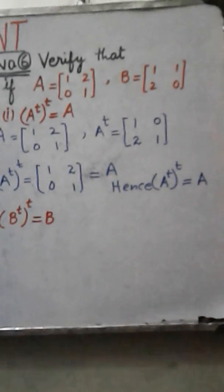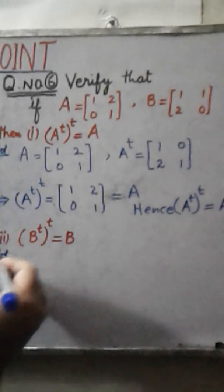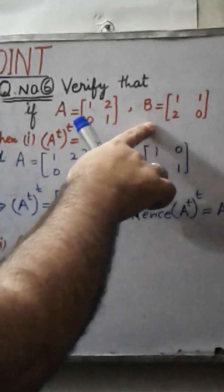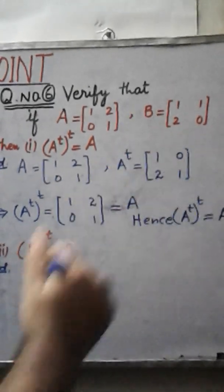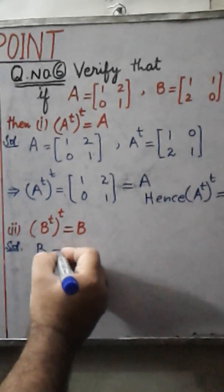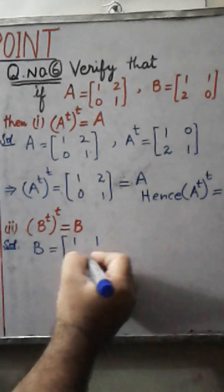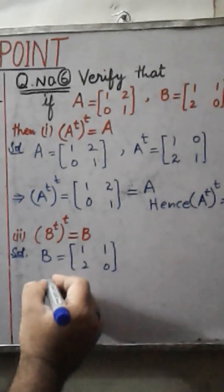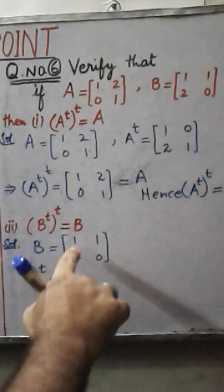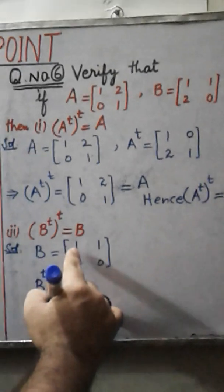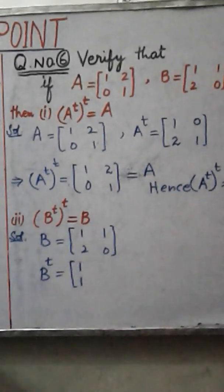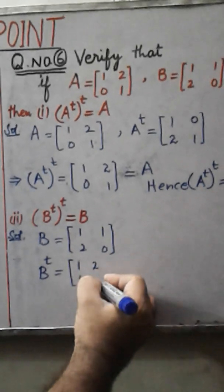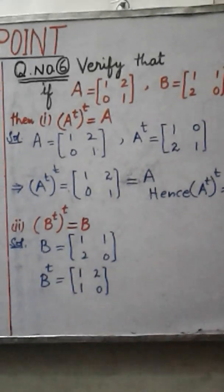Now we come to the second part. We write down matrix B — the elements of matrix B are 1, 1, 2, 0. First we take the transpose of matrix B. We change the rows into columns: row 1 contains 1, 1, which becomes a column 1, 1; and row 2 contains 2, 0, which becomes the column 2, 0. So this is B transpose.